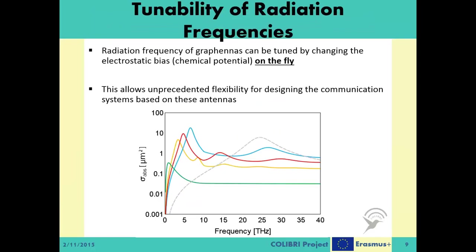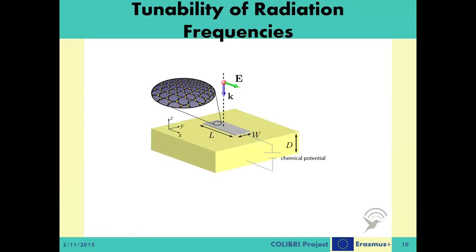The radiation frequency of graphennas can be tuned by changing the electrostatic bias, or the chemical potential, on the fly — meaning you can change this frequency while the antenna is in operation. This allows unprecedented flexibility for designing communication systems based on these antennas.